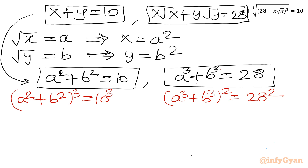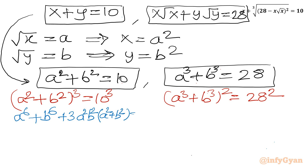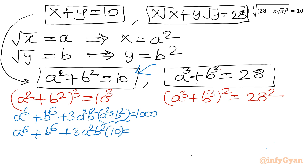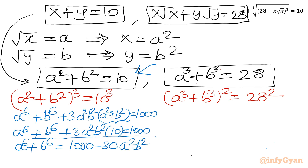Let us expand using identities. (a² + b²)³ expands to a⁶ plus b⁶ plus 3a²b²(a² + b²) equal to 1000. Since a² + b² equals 10, this becomes a⁶ plus b⁶ plus 30a²b² equal to 1000, or a⁶ plus b⁶ equals 1000 minus 30a²b².